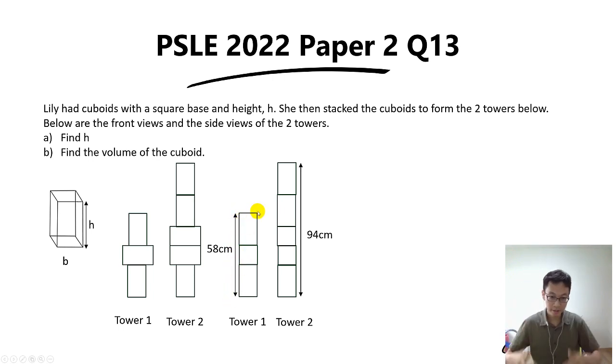They give you the height is 58 cm for Tower 1. For Tower 2, you look from the side and get a view of three rectangles and two squares with a height of 94 cm.